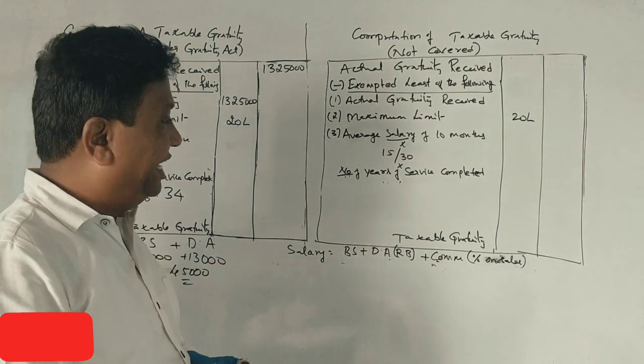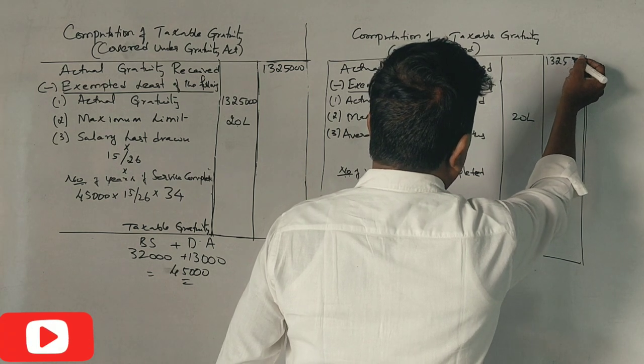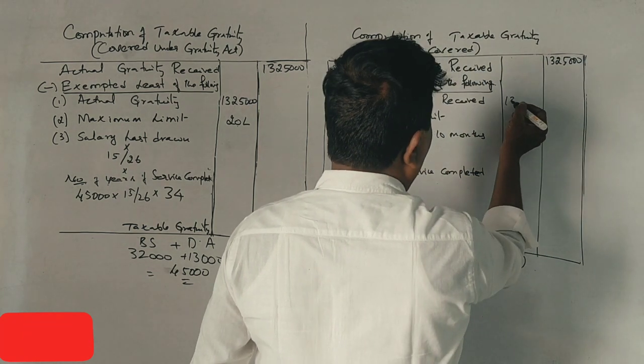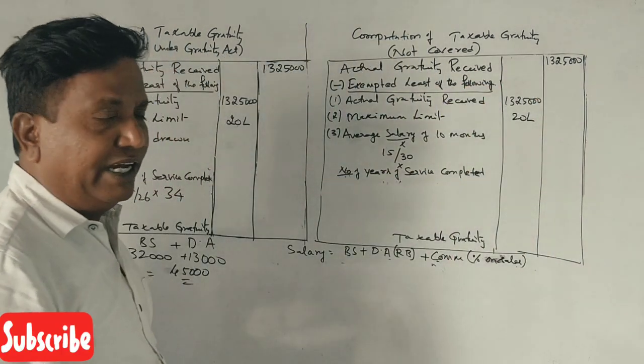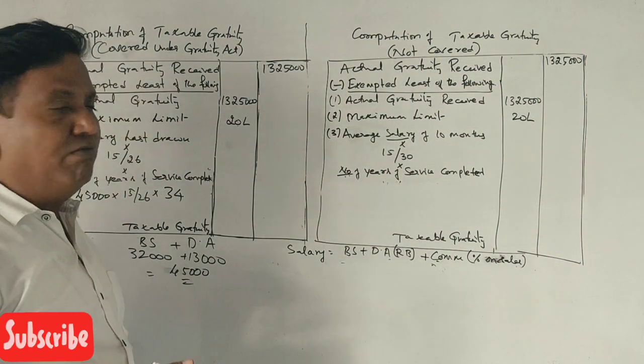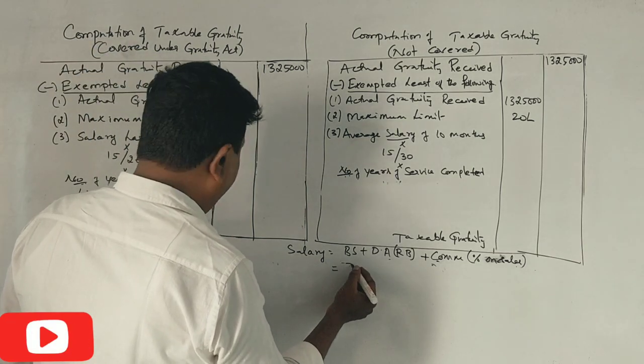Not covered, what is the formula? First, 13,25,000 actual gratuity received. Average salary, half month's salary for every completed year of service is 32,000.